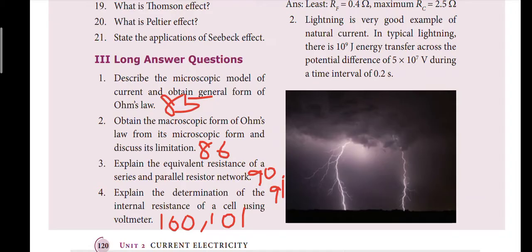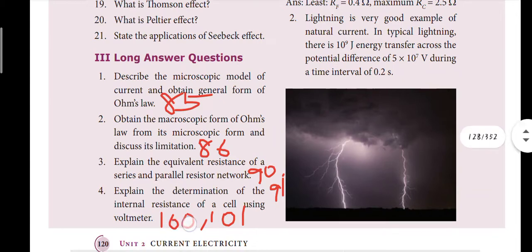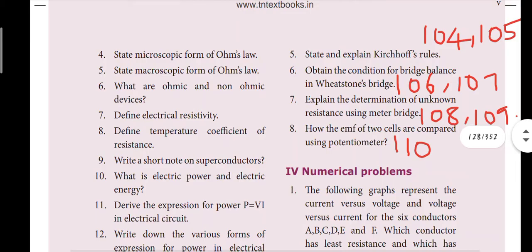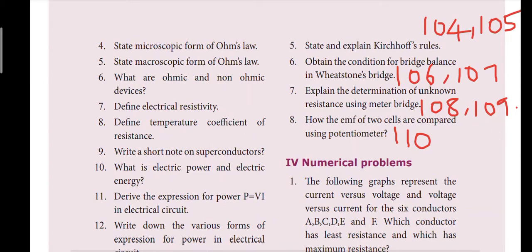Fourth question: determination of internal resistance using voltmeter, page number 90 and 91. Fifth question: Kirchhoff's rule, page 104 and 105. Sixth question: obtain the condition for bridge balance in Wheatstone bridge, page 106 and 107 - important question. Seventh question: explain the determination of unknown resistance using meter bridge, page 108 and 109. Eighth question: how the EMF of two cells are compared using potentiometer, page 110.